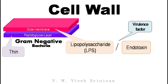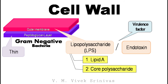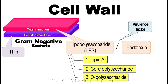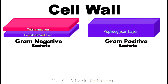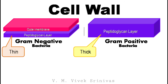This lipopolysaccharide is a complex molecule consisting of: number one, lipid A; next, the core polysaccharide; and lastly, the O-polysaccharide, or the O-antigen. The thickness and the chemical composition of the cell wall varies between the gram-positive bacteria and the gram-negative bacteria.